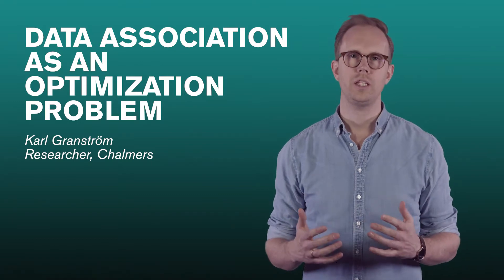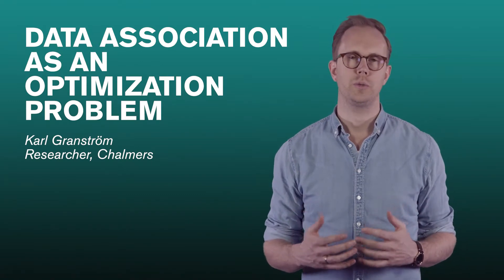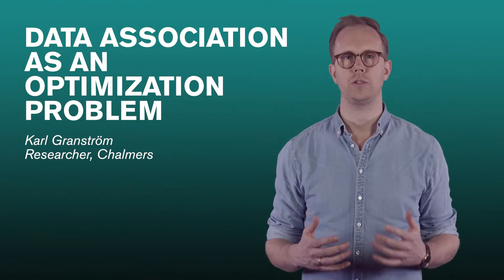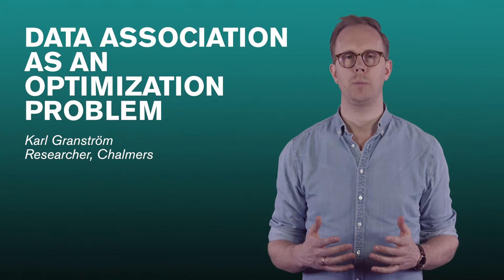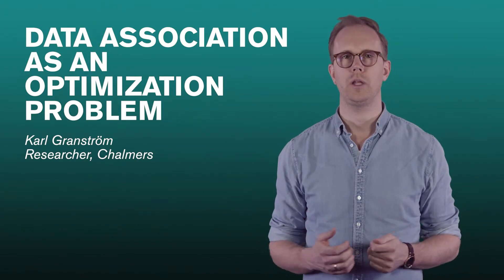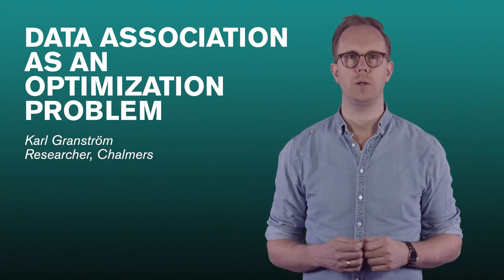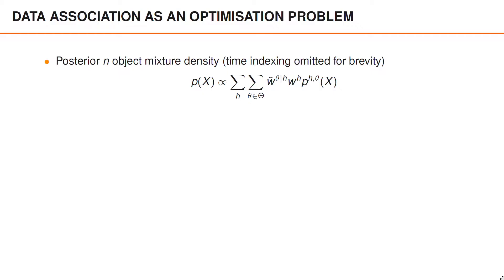Welcome! In the next few videos we will learn about how we can handle the data association problem by formulating it as an optimization problem. We've seen earlier that the posterior n-object mixture density is given by the expression shown here.